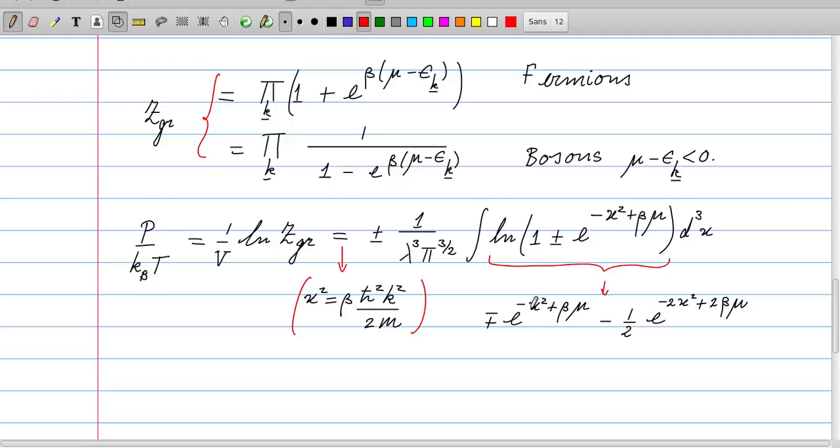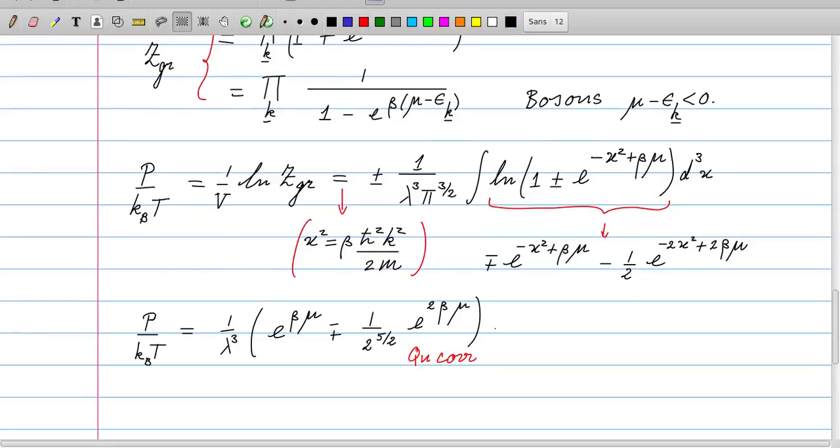If we perform that for the logarithm, we get these two terms - the first term has this ∓ sign and the second has a minus sign. We should not forget this overall ± sign which comes from the fact that for fermions I have just the product, and for bosons I have the inverse, which gives the minus sign. Then we arrive at this straightforward expression after we perform the integrals.